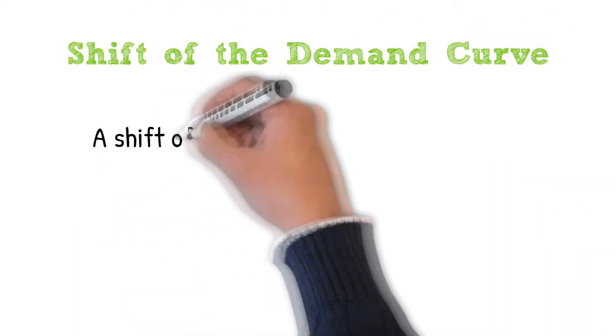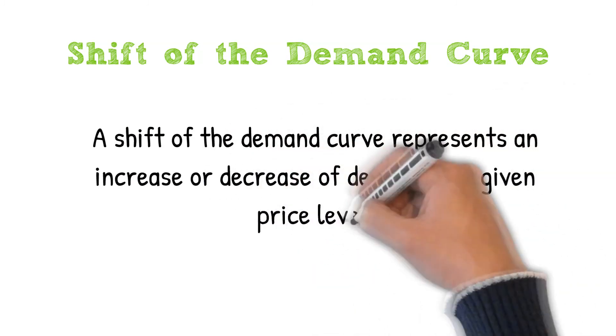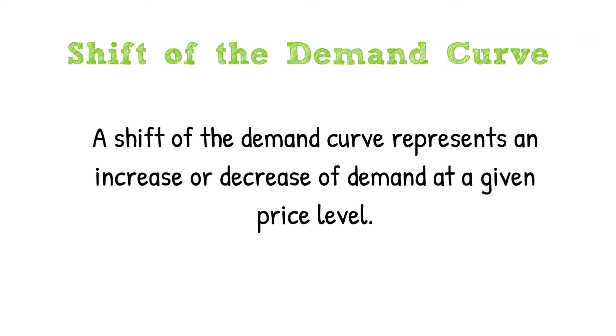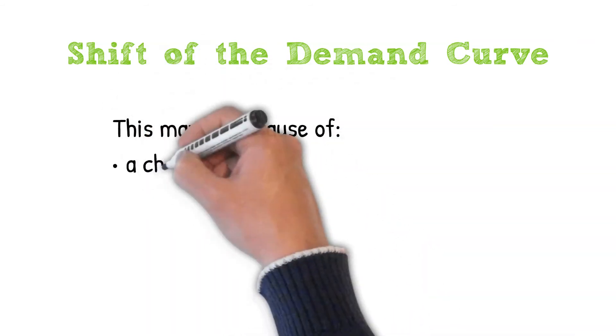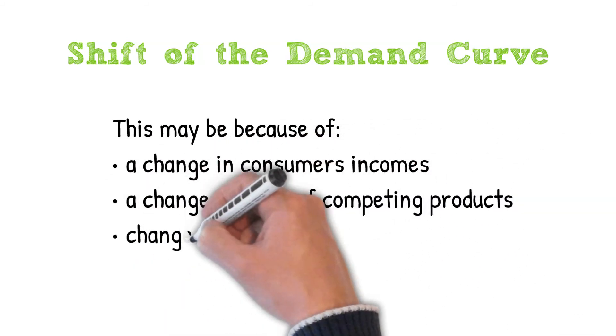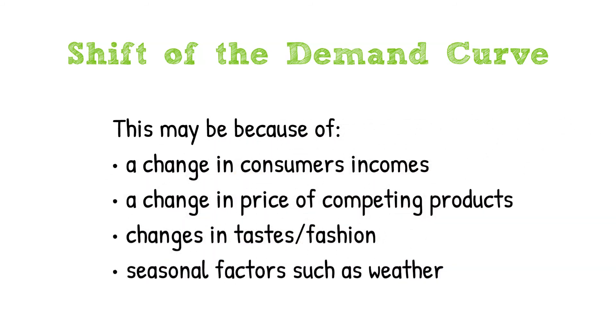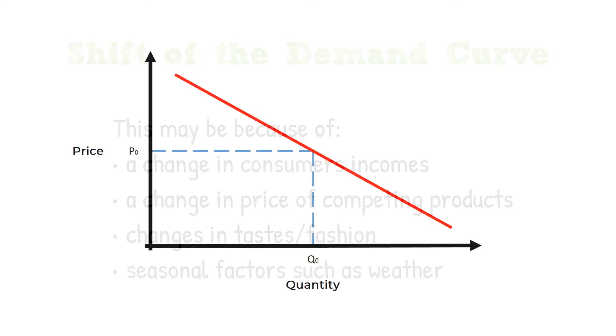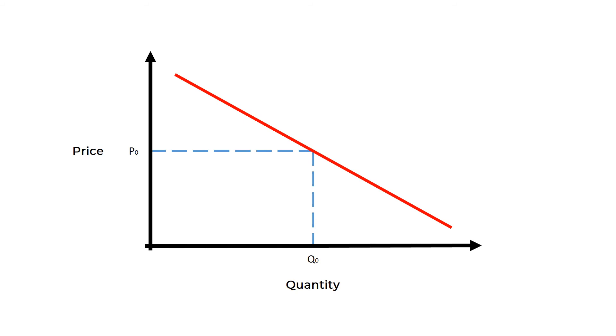Now let's look at shifts of the demand curve. A shift of the demand curve represents an increase or a decrease of demand at a given price level. This may be because of a change in consumers' incomes, a change in price of competing products, changes in tastes and fashion, or seasonal factors such as weather. Let's look at the demand curve again. We can move the demand curve up or increase the demand. We can see that for the same quantity of goods, the prices increase from P0 to P1. If we move the demand curve down or decrease the demand, for the same quantity of goods we see the price falls from P0 to P2.